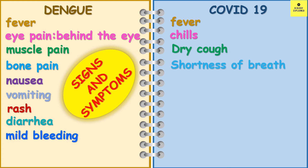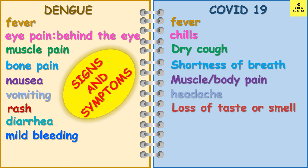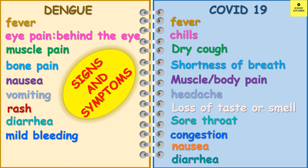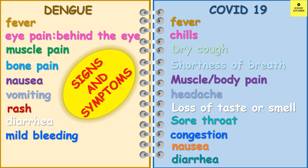COVID-19 symptoms also include dry cough, shortness of breath, muscle pain or body pain, headache, loss of taste or smell, sore throat, congestion, nausea, and diarrhea. Loss of taste or smell is found more in COVID-19 and not in dengue. Diarrhea is more common in dengue compared to COVID-19. Dry cough and shortness of breath are more common in COVID-19 compared to dengue.